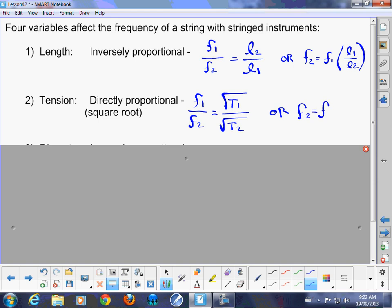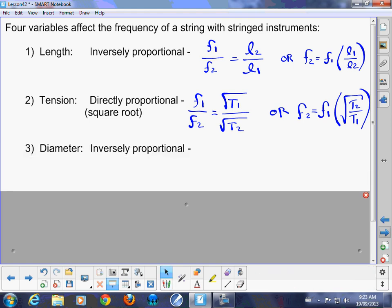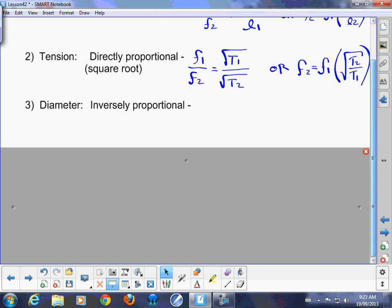We can rewrite this so that you can calculate that new frequency. So f2 equals f1 multiplied by the square root of t2 over t1. And yes, you can just write it as one square root in that case. That's how you find your new pitch based on the change in tension or new frequency.